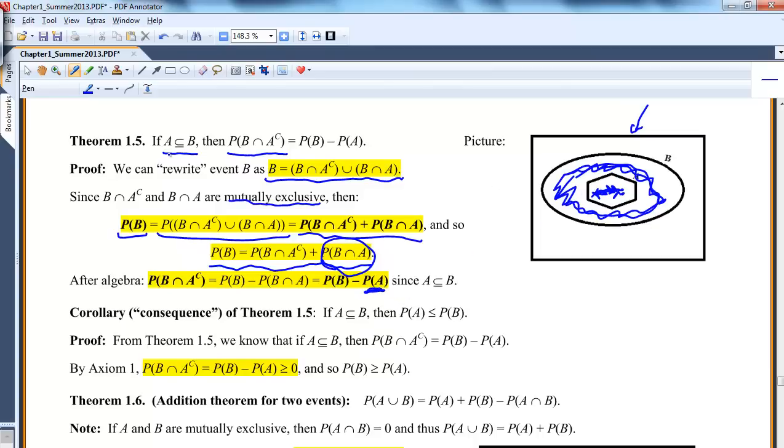Anytime, right? So we were given that A is a subset of B. If A is a subset of B, then A intersect B is just A. So now this is what we had when we rearranged above, that's the probability of B minus B intersect A. But this is just A, so I'm going to replace it. So another nice result.